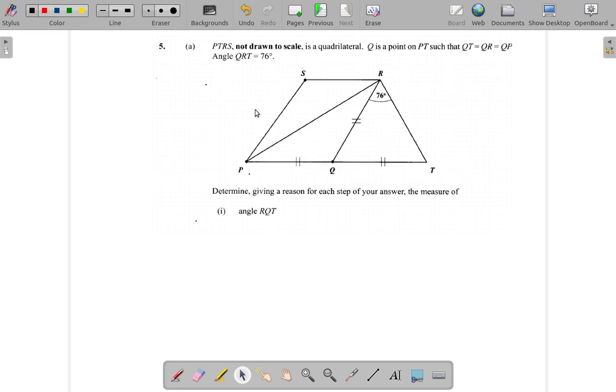Angle QRT is 76 degrees. Determine, giving a reason for each step of your answer, the measure of angle RQT.